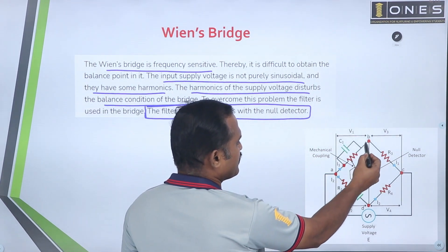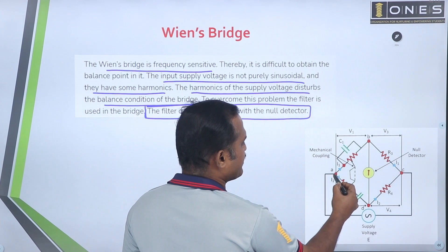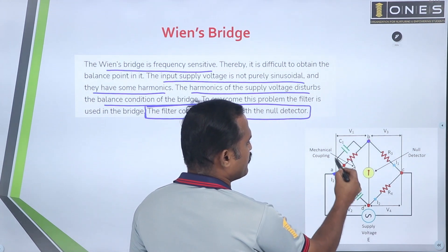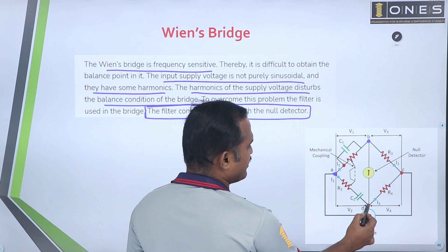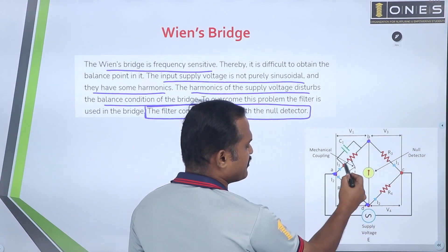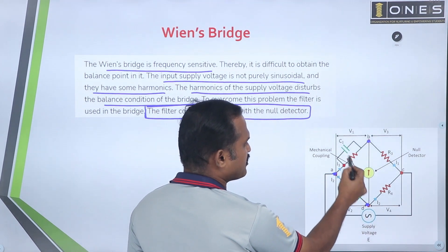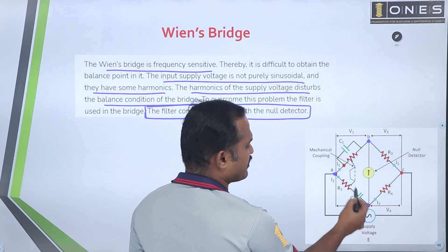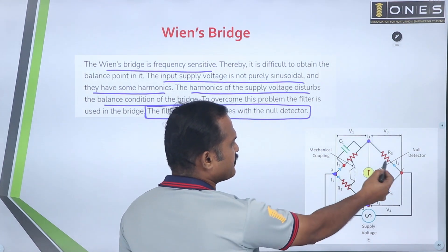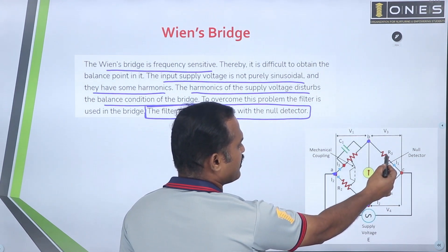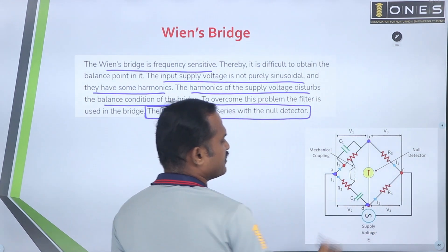In this case, we see across points A and B a parallel combination of resistance and capacitor, and across A and D a series combination of R2 and capacitor. The standard resistances are arranged as R3 and R4.